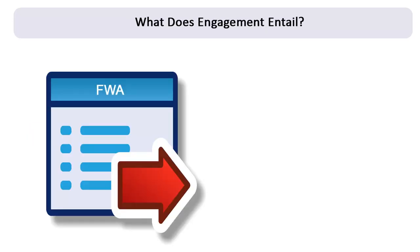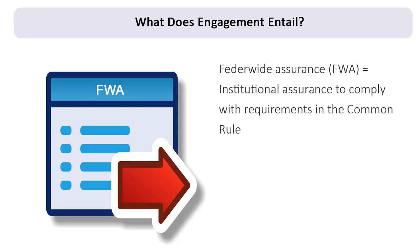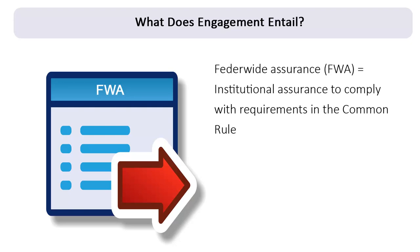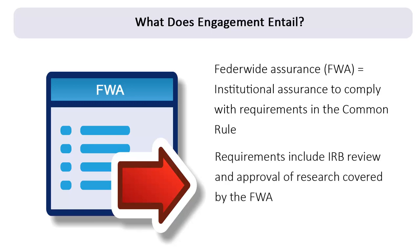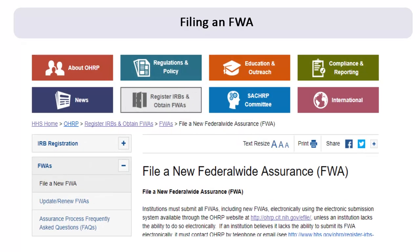What does engagement entail? Engaged institutions must hold or obtain a Federal-Wide Assurance, or FWA, with OHRP. To obtain an FWA, the institution provides written assurance that it will comply with the requirements set forth in the Common Rule, including Institutional Review Board, or IRB, review and approval of research that is covered by the assurance. Information about obtaining an FWA can be found on the OHRP website under the tab titled Register IRBs and Obtain FWAs.